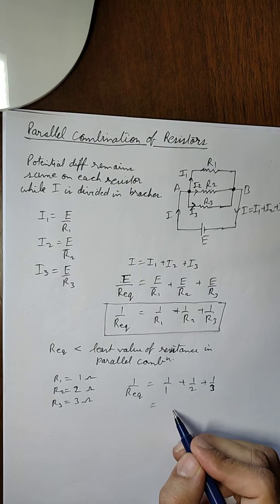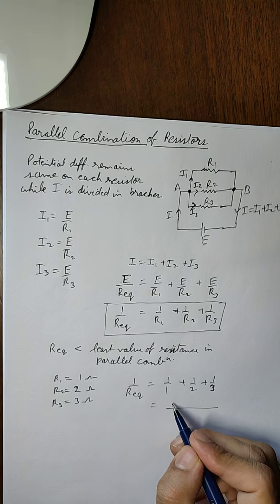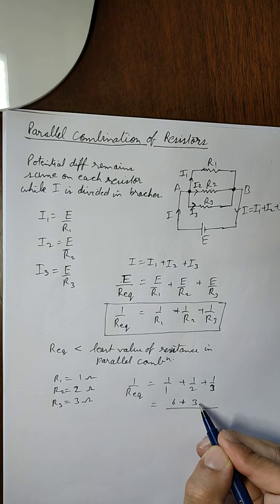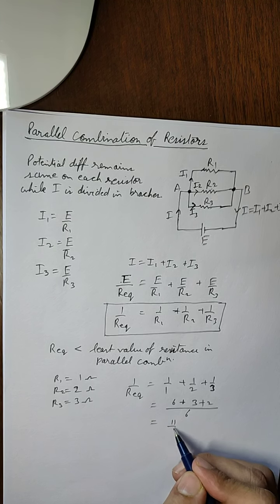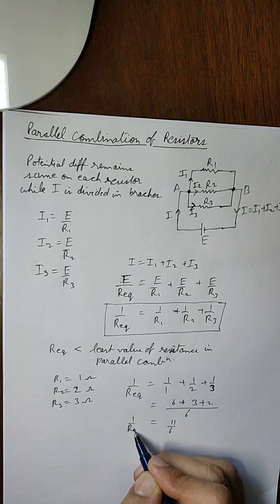So if we combine this, then it will be equal to 6 plus 3 plus 2 upon 6. So that will be 11 upon 6, which equals 1 upon R equivalent. So R equivalent will be equal to 6 upon 11.